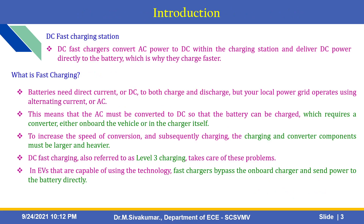What is DC fast charging station and what is fast charging? Fast charging means batteries need direct current or DC to both charge and discharge, but your local power grid operates using alternating current or AC. This means the AC must be converted into DC so that the battery can be charged, which requires a converter either on-board the vehicle or in the charger itself. To increase the speed of conversion, the converter components must be larger and heavier.